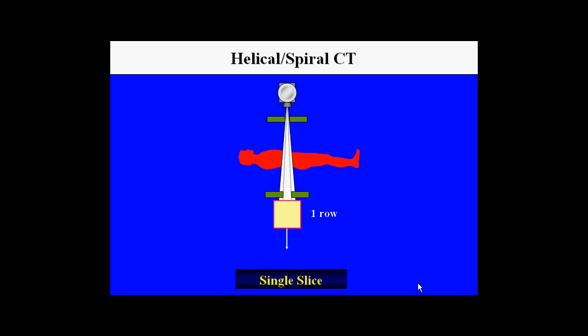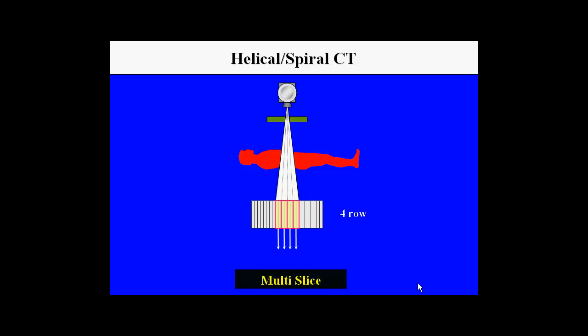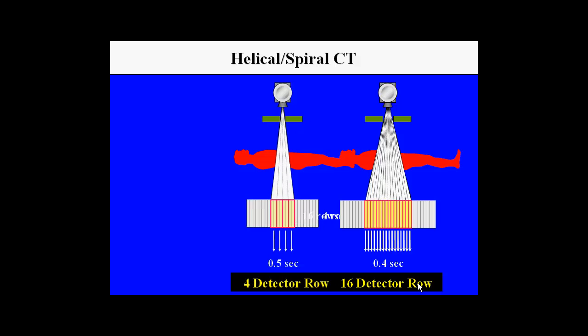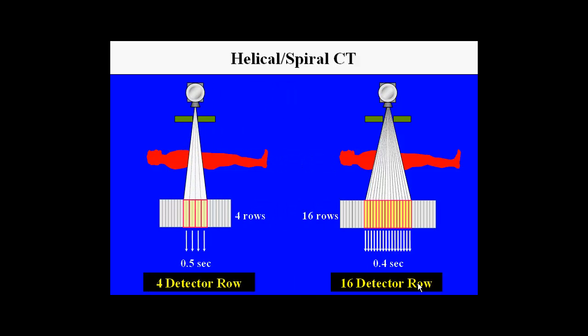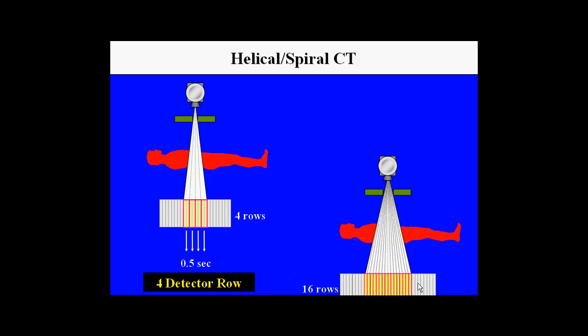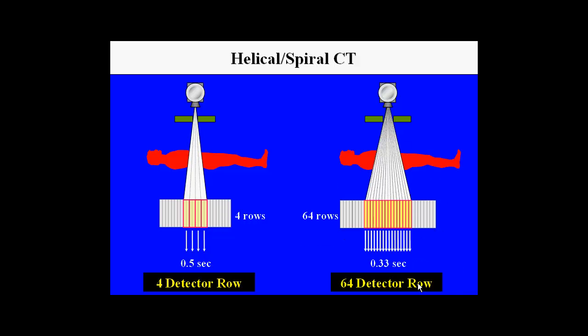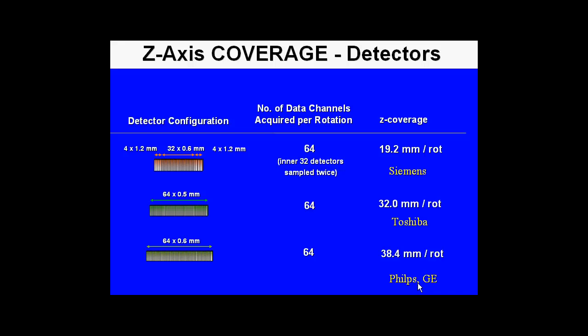Originally, single-slice scanners were available, but these were totally inadequate for cardiac work. Later, multi-detector scanners such as a four-row scanner were produced, but these also were terribly inadequate for cardiac work. The 16-row scanner was the first time we were able to actually begin to see good cardiac applications, but this was quickly replaced with the current state-of-the-art 64-row scanner.